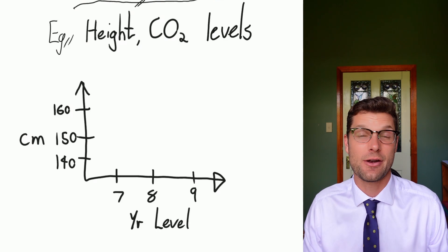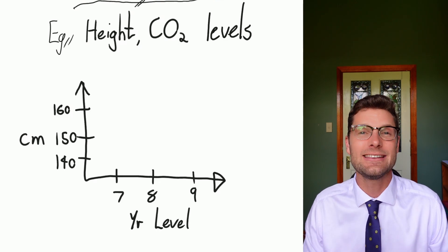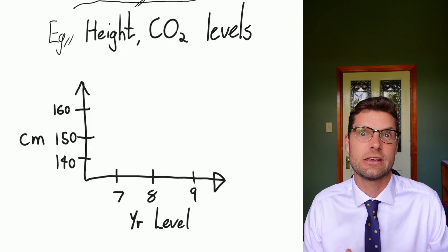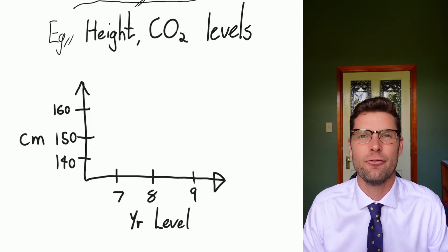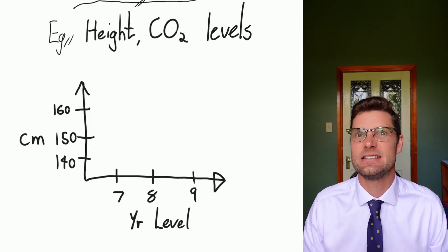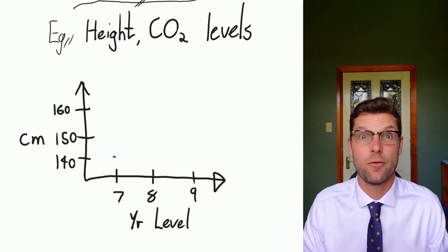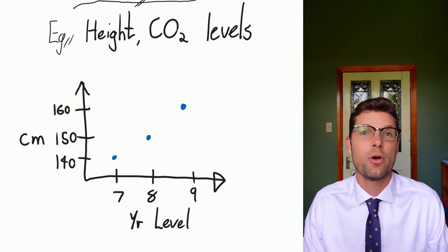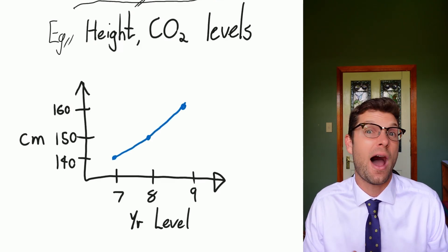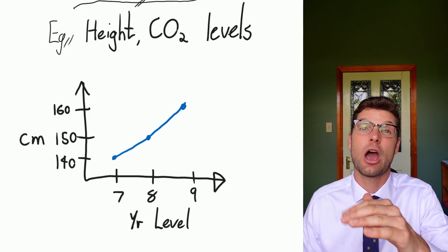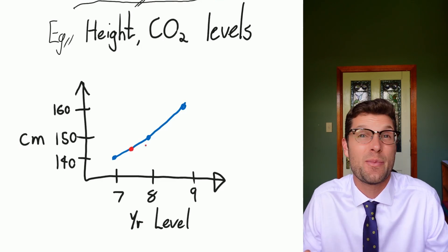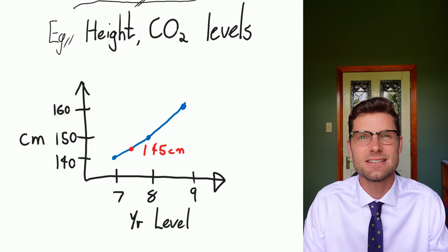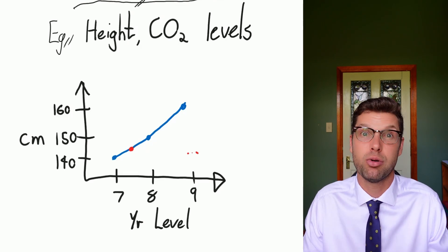We're going to do a really quick example — please don't copy how I've done this graph, it's very hastily done. We're going to look at how tall you are based on what year group you're in, taking the average. So someone in year seven could be 140 centimeters, someone in year eight, 150 centimeters, and so on. Would it make sense to ask how tall you were halfway through year seven? We could go up on that graph and probably guess you're about 145 centimeters. This makes sense, so a line graph is appropriate.